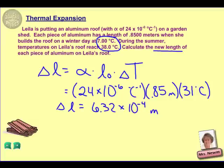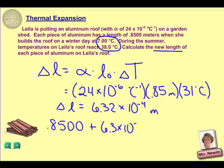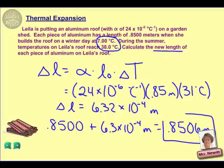Since we're going from low temperature to high temperature, our new length would be expanded — it would be greater than our original. So we take our original of 0.8500, add on our change of 6.3 times 10 to the negative 4th, and we have a new length of 0.8506 meters. Again, notice a very, very small change from that change in temperature.